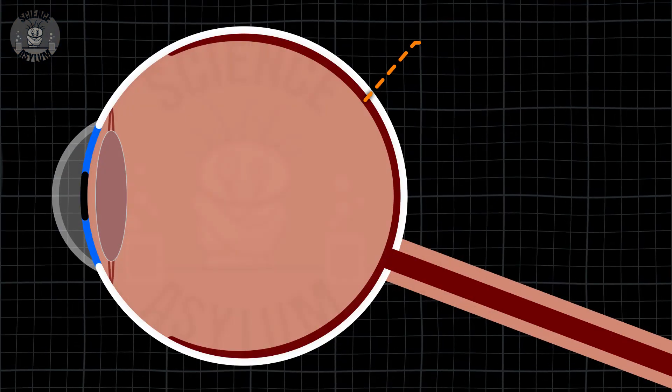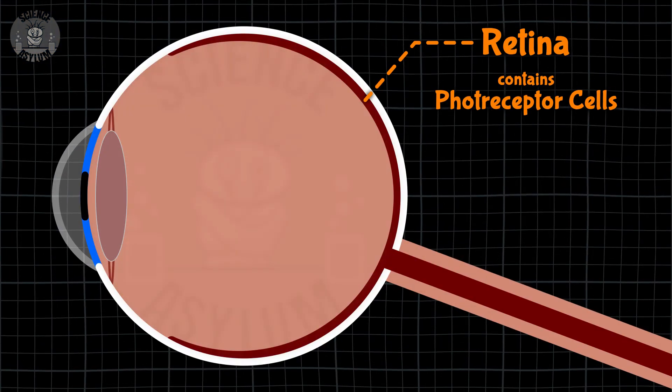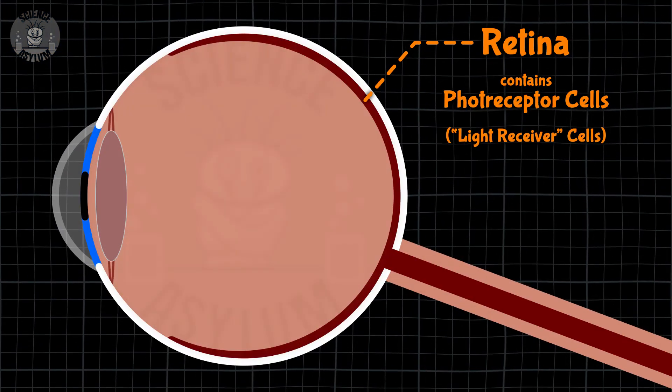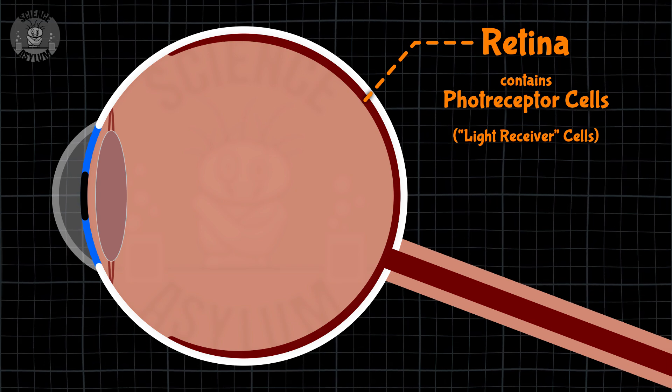The next step in the process is how our eyes actually respond to that light. It's time for a crash course in human eye biology. The inside back of the eye is covered in cells called photoreceptor cells, which literally means light receiver. It's kind of nice when a scientific name actually makes sense.